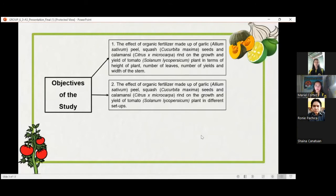Second, the effect of organic fertilizer made up of garlic Allium Sativum peel, squash Cucurbita Maxima seeds, and calamansi Citrus X Microcarpa rind on the growth and yield of tomato Solanum Lycopersicum plant in different setups.